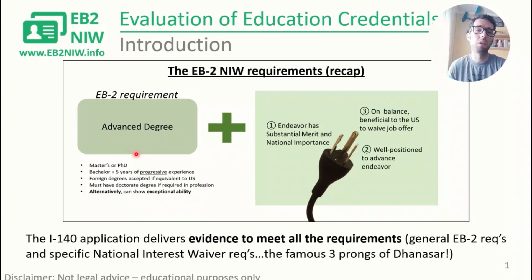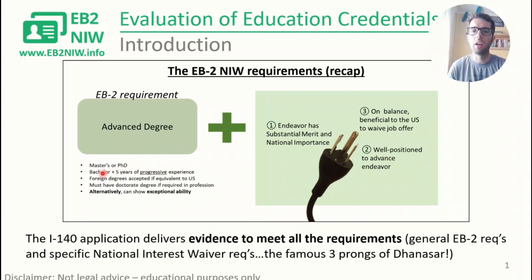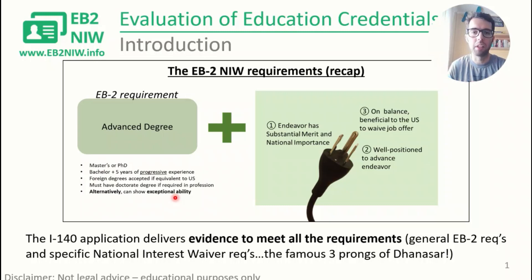That requirement is the advanced degree requirement. I'm calling it 'advanced degree' but it's more flexible than that — it includes having a master's or PhD, but it can also be substituted by having a bachelor's and five years of progressive experience. If you don't have any bachelor's, master's, or PhD, you can show exceptional ability. In the future I'll make a specific video on exceptional ability, but today we're going to talk about advanced degree — as master's, PhD, or even bachelor's — because we're going to talk about foreign degrees.